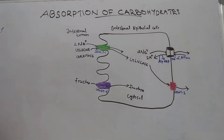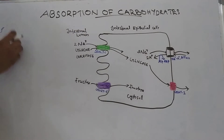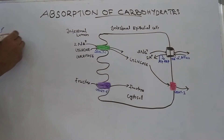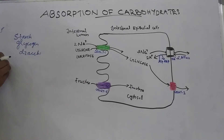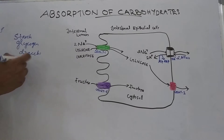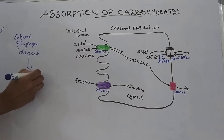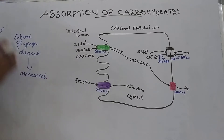Today we will discuss the absorption of carbohydrates. When food materials reach the small intestine, all complex dietary carbohydrates like starch, glycogen, and disaccharides are converted to simpler monosaccharides. At that point, carbohydrate digestion is completed.